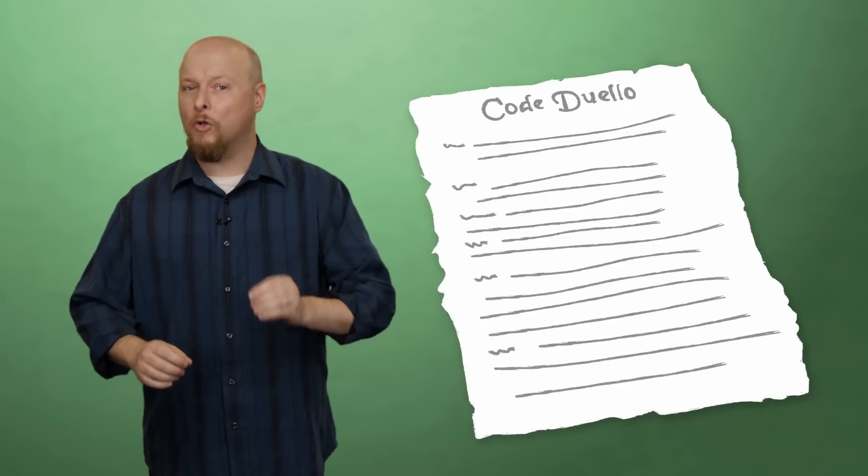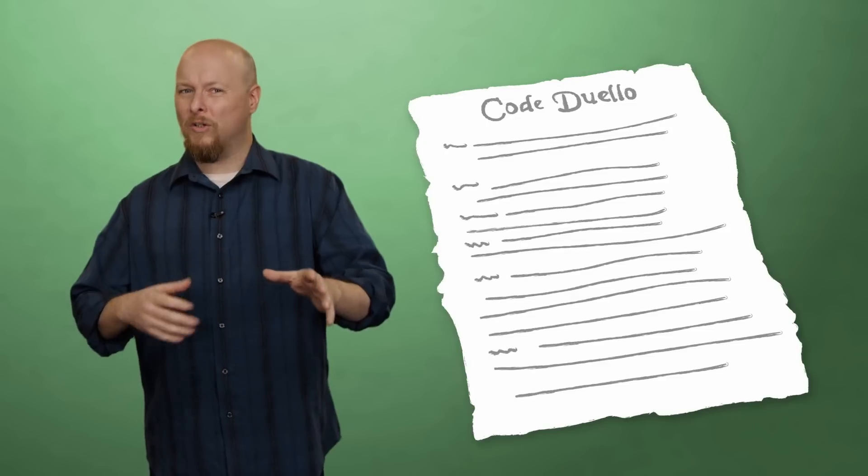There's no one list of universal rules, but there were some especially popular guides. For example, the Irish Code Duello of 1777. Let's see how a duel, according to the Code Duello, might go down.